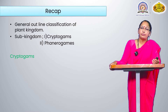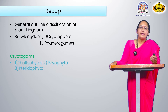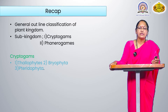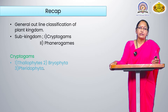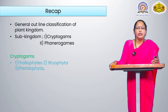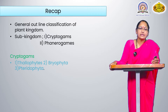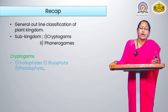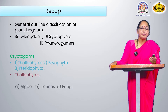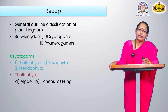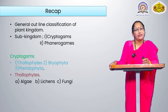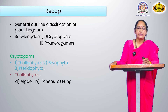Today we focus on the cryptogames. Cryptogames have three divisions: first is thallophytes, second is bryophyta, and third is pteridophyta. In today's lecture we see the thallophytes, which also divides into three classes: first is algae, then lichens, and third is fungi.